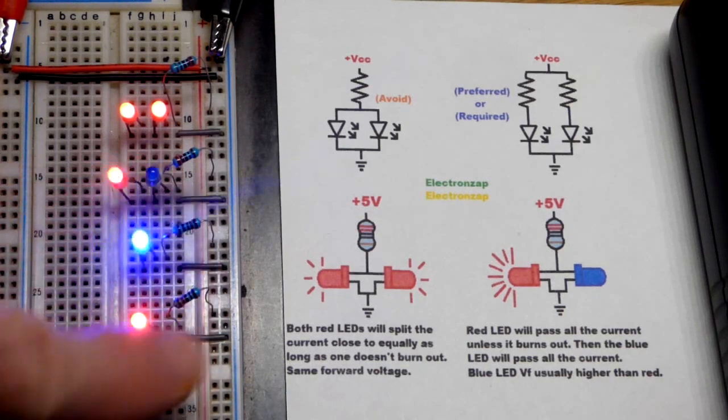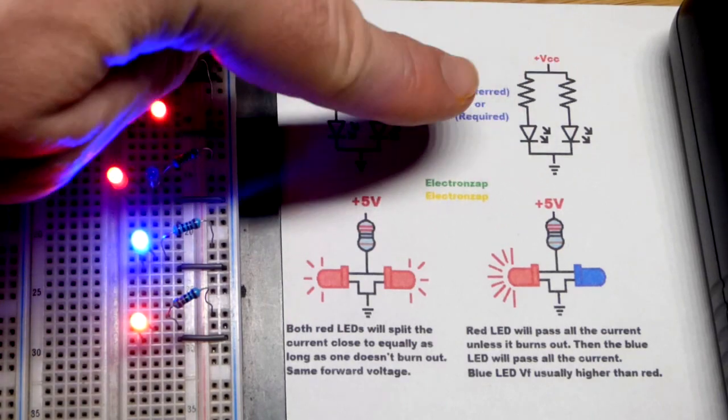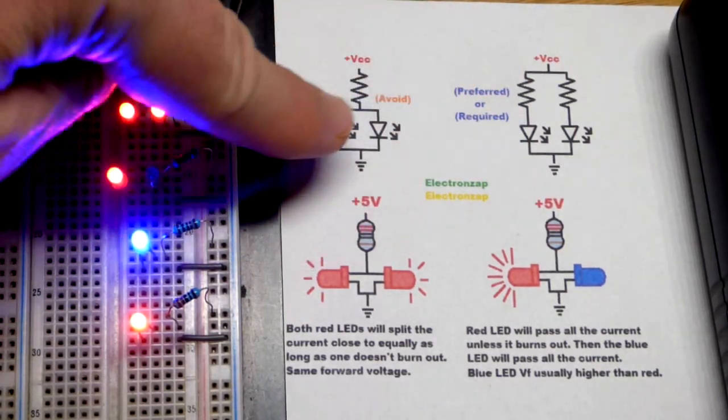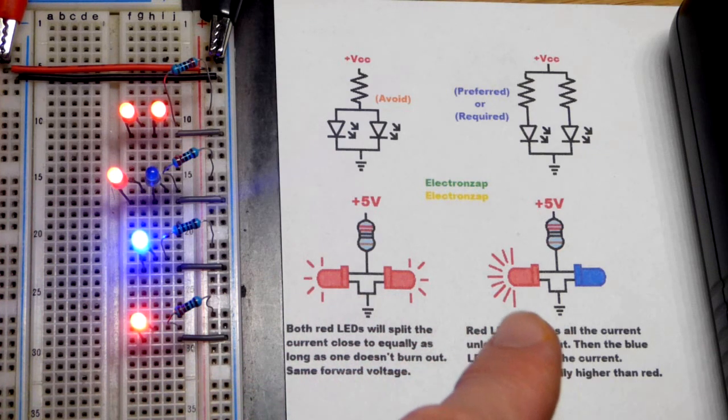So now in this video we're going to take a quick look at why you want to give parallel LEDs their own protective resistors. Sometimes you may be able to get away with it but that is less desirable as we'll look at that later on.